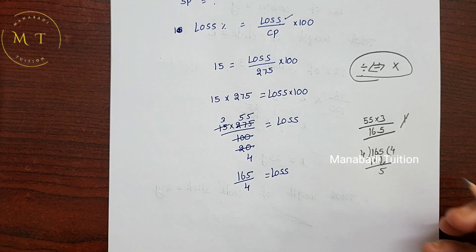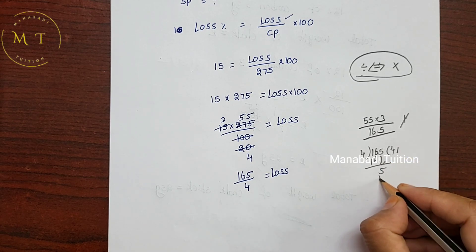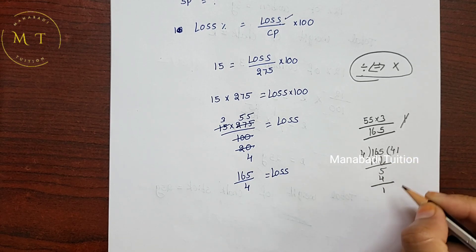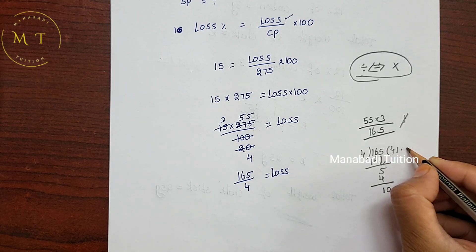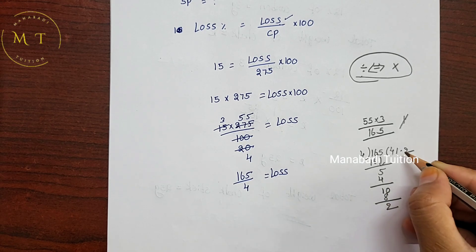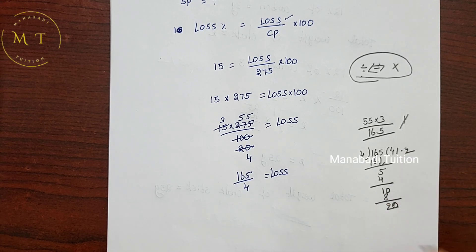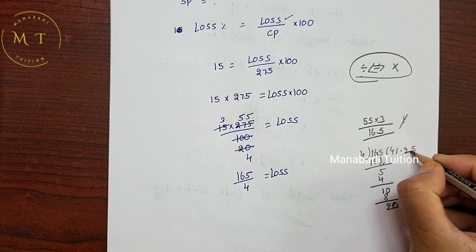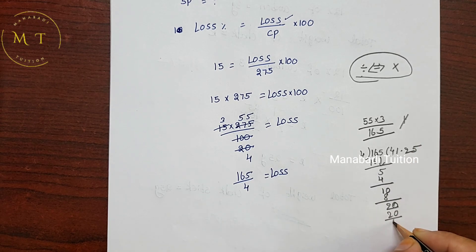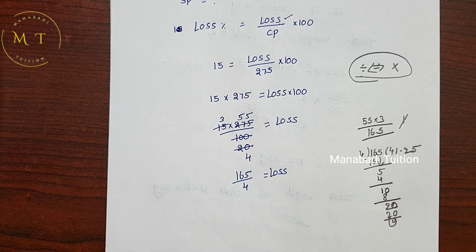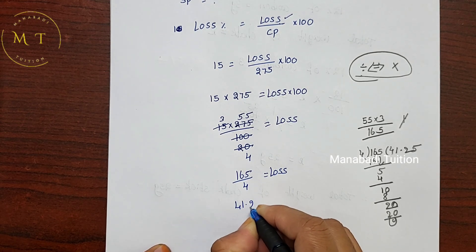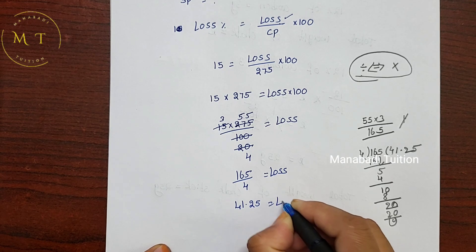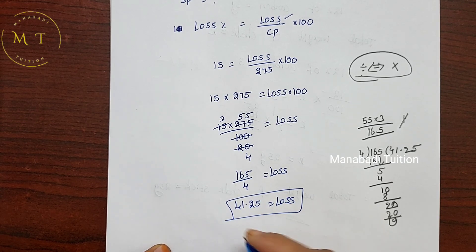Calculating: 4 into 5 is 20, remainder 0; 4 into 2 is 8, subtraction gives 2; 4 into 5 is 20, remainder 0. So 41.25. Loss is 41.25 rupees.